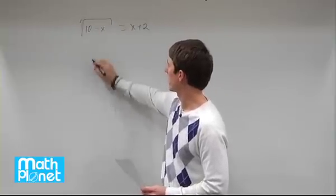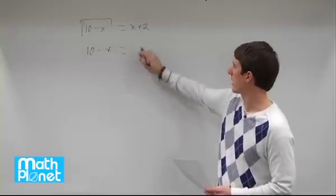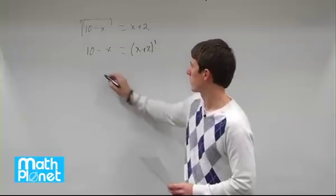If we take the square of this side, we'll just get 10 minus x back. The square of this side gives us the square of x plus 2. So we need to square this out and see what we get from that.